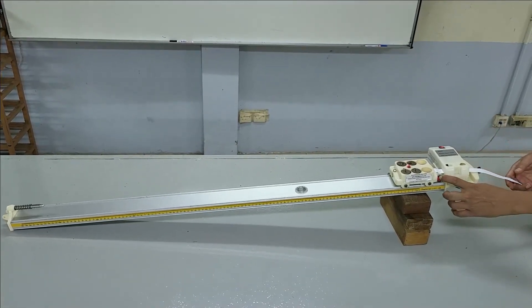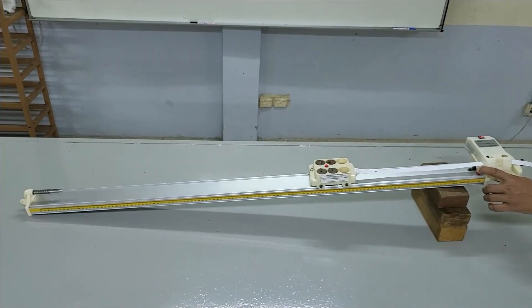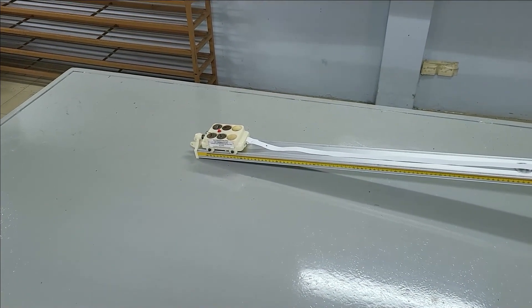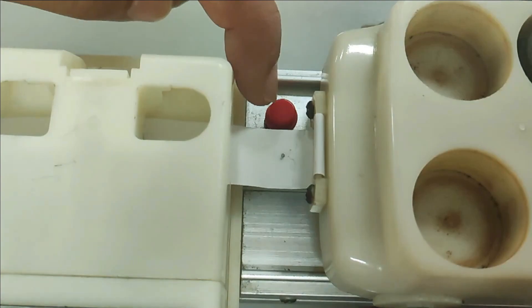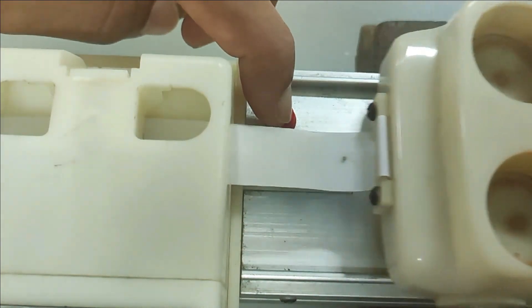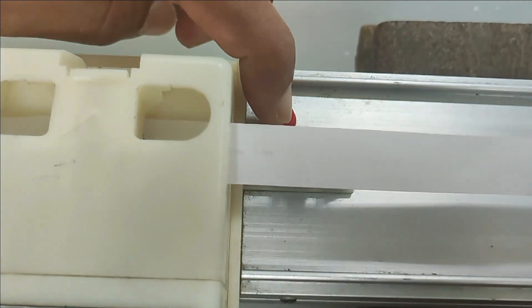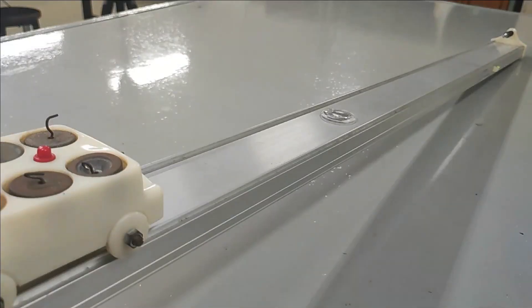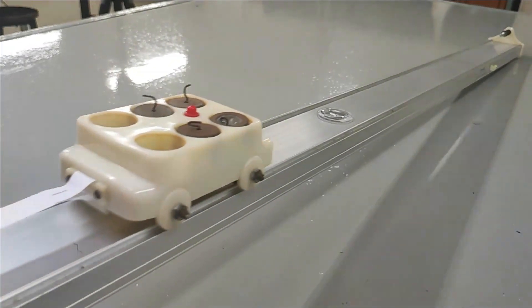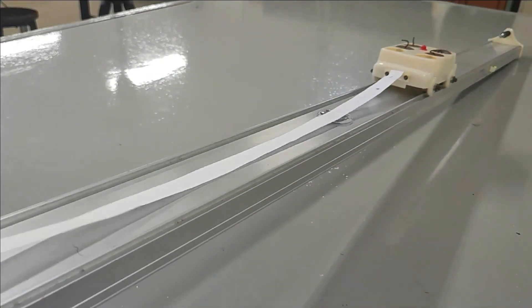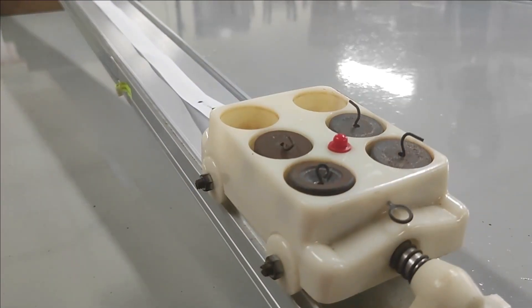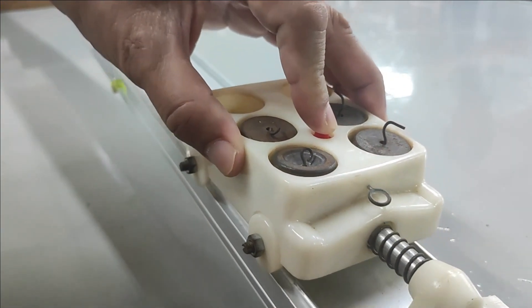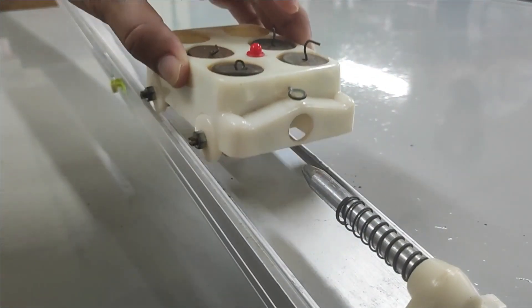Switch on the electric spark timer. Press the red button to release the trolley freely down the runway.